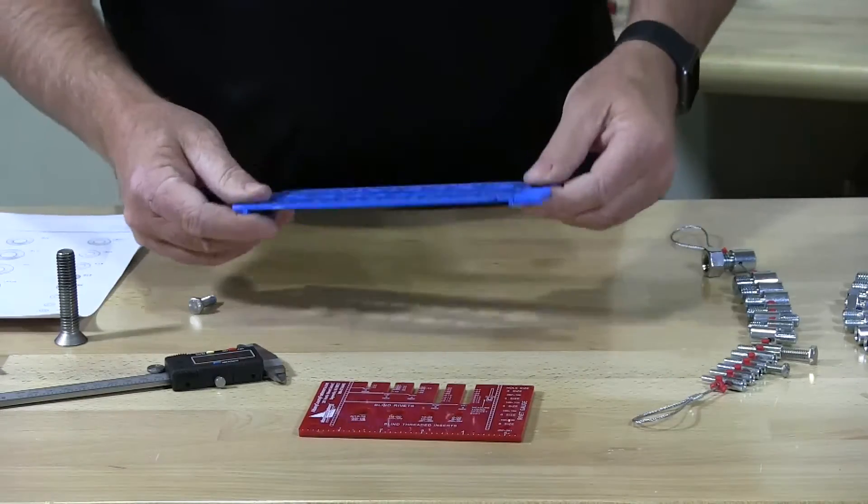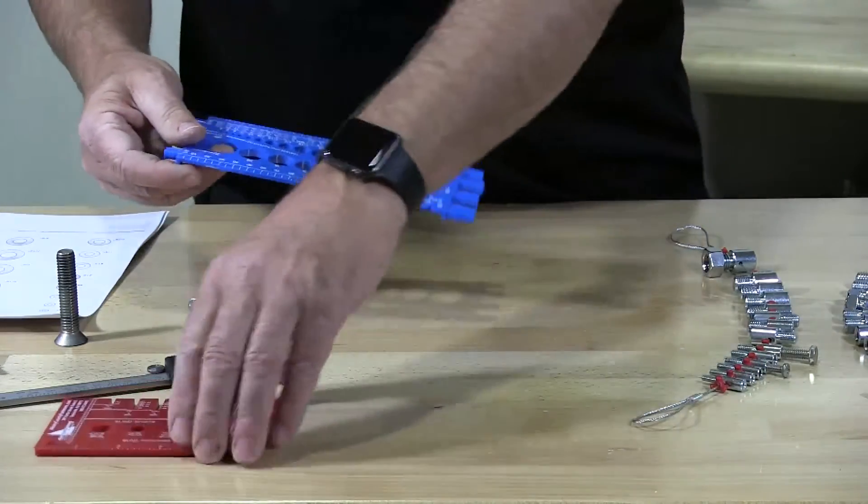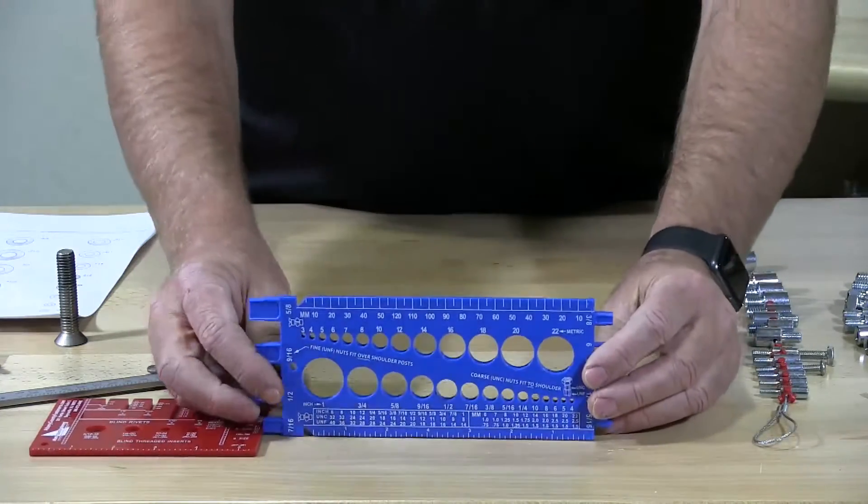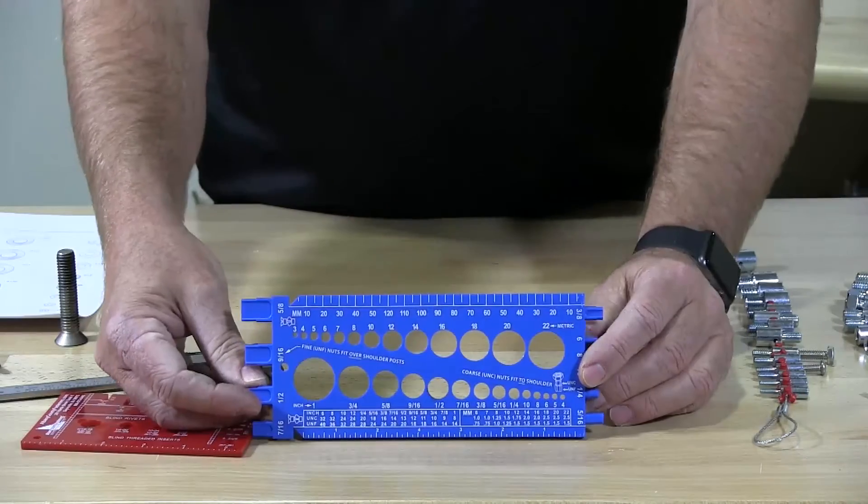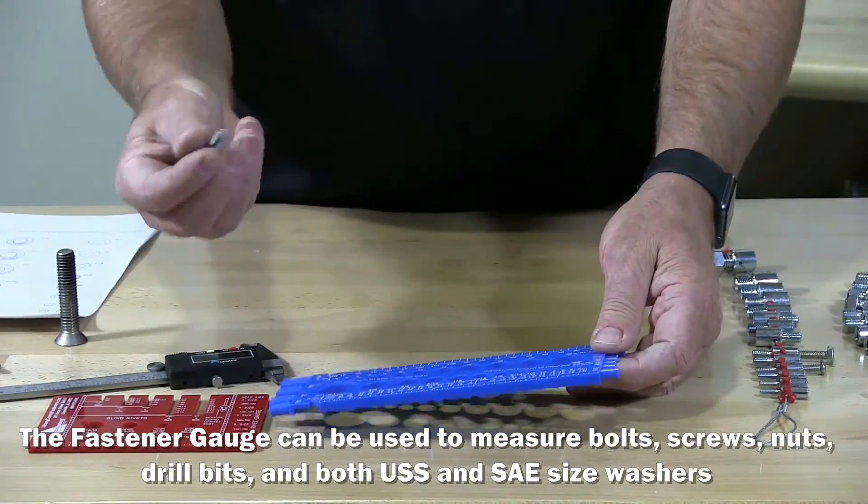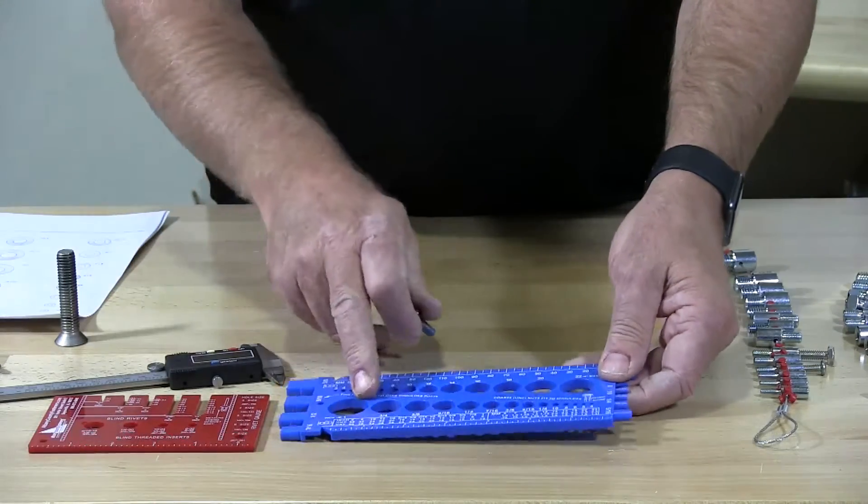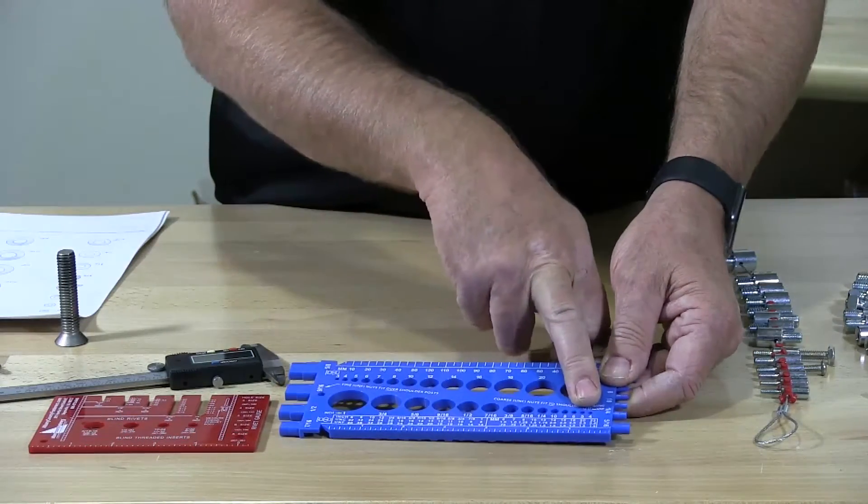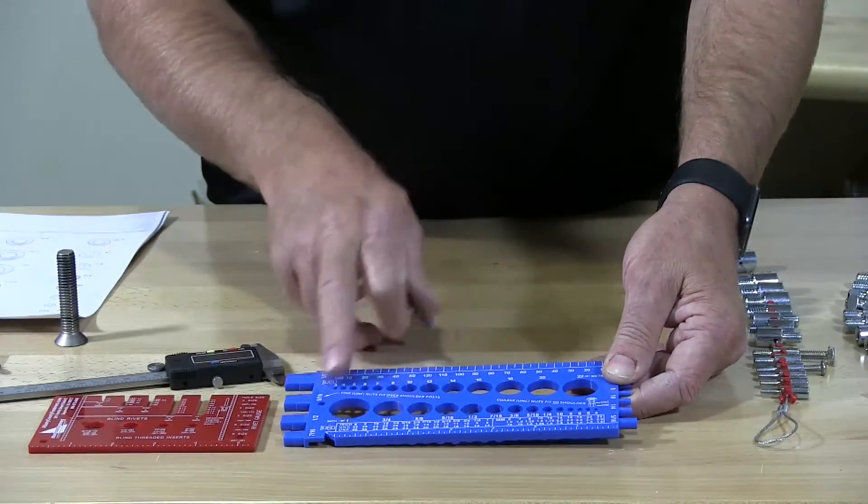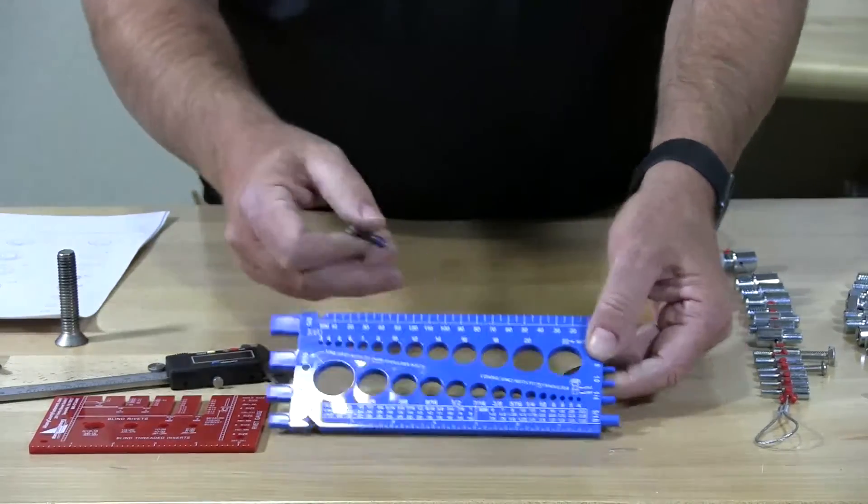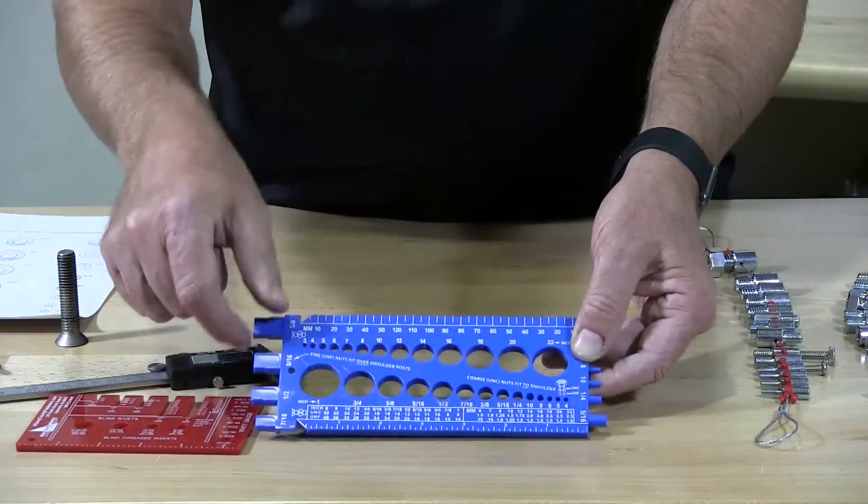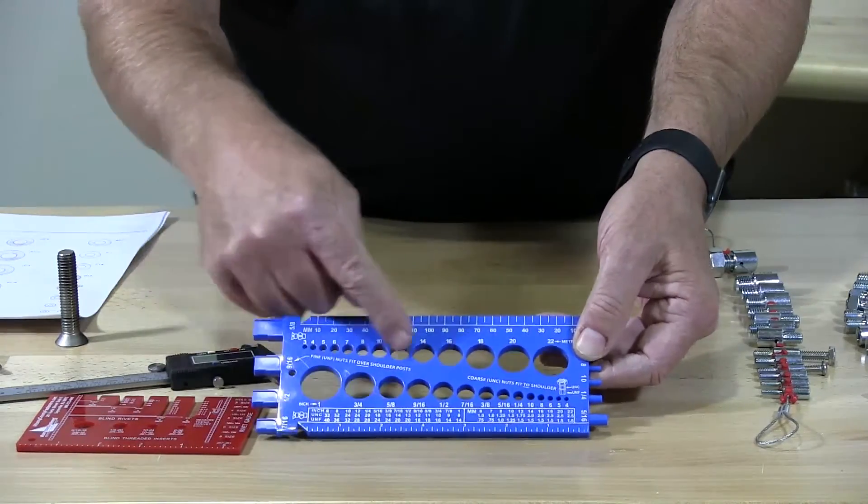The next gauge we have is an imperial metric gauge. This gauge will allow you to measure. This is a quarter twenty. Here down here they have anywhere from a number four all the way up to one inch bolt you can slide in here. On this side, half of the gauge has imperial which is this side here and the other half of the gauge is metric.